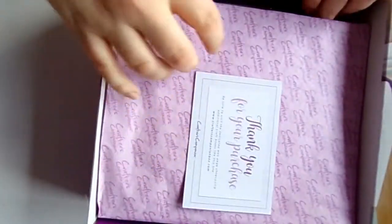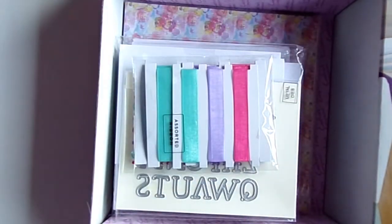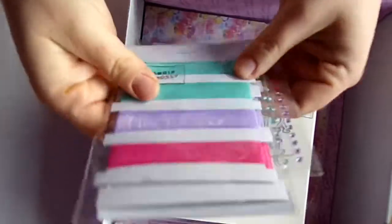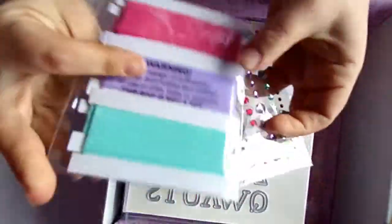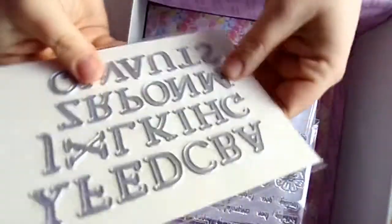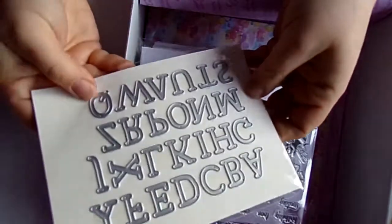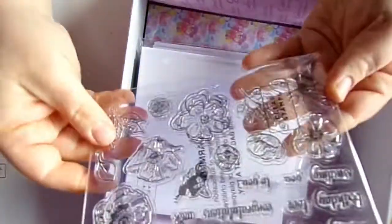So in the lovely packaging as always, oh that's some lovely ribbon. Some nice shiny gems. I always love a bit of sparkle and we've got some alphabet dies and some lovely acrylic stamps.